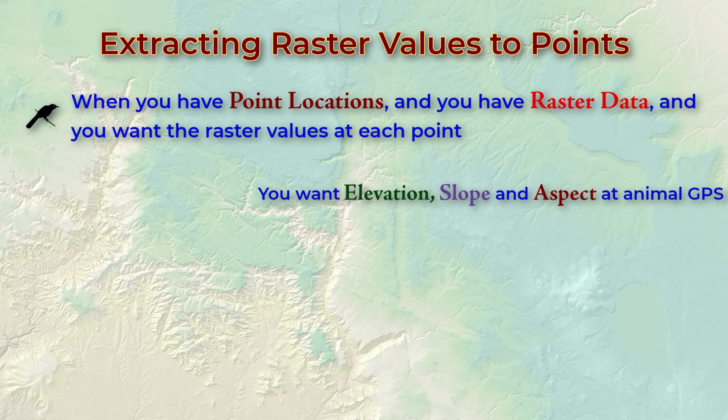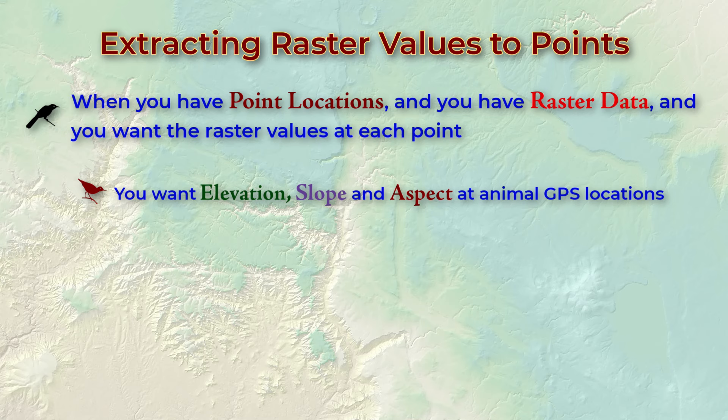In wildlife analysis, we might have a bunch of GPS locations of an animal. We want to find the elevation, slope, and aspect at each location. In forestry, we might have coordinates of forest inventory plots, and we want to know the insulation or aspect values at each plot.